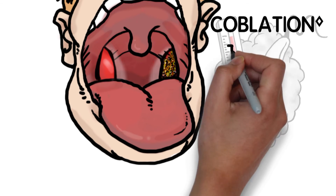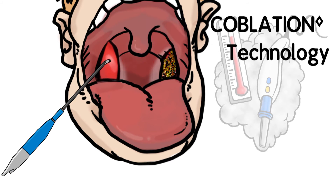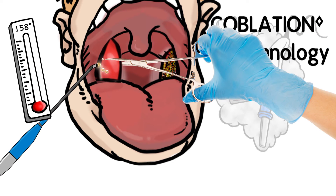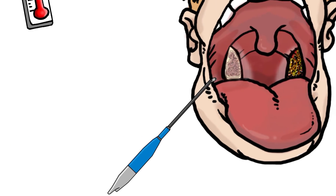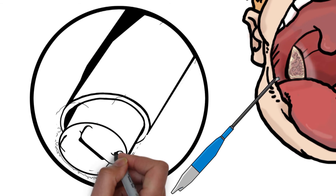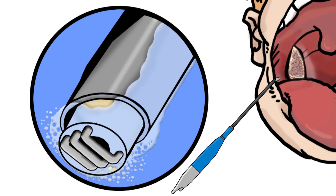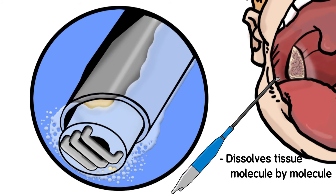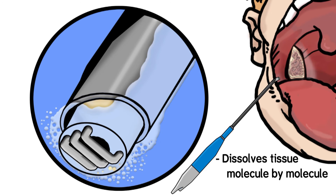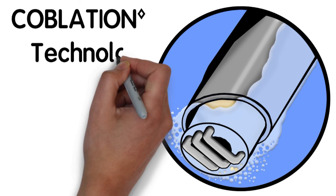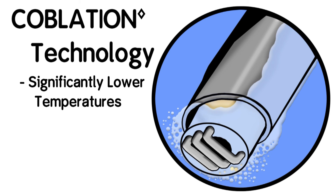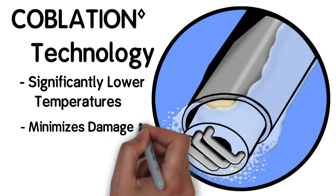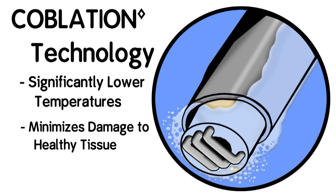Coblation technology is an alternative to electrocautery and uses plasma energy to precisely remove soft tissue. This plasma field is contained at the tip of the coblation device and dissolves tissues molecule by molecule, resulting in the precise removal of the targeted tissue. The coblation process generates significantly lower temperatures on the contact tissue, which minimizes damage to the surrounding healthy tissue.